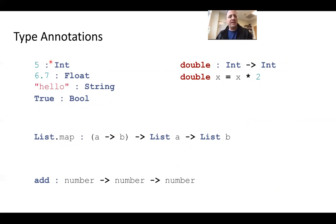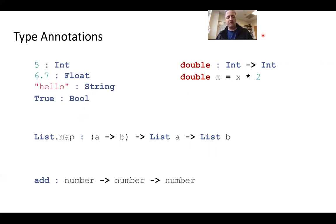Let's start by saying that in Elm, type annotations come with a little colon after it. So five is annotated and that means we're saying it's an int, 6.7 is a float, hello, bool — all of those things. We can also annotate the types of functions.